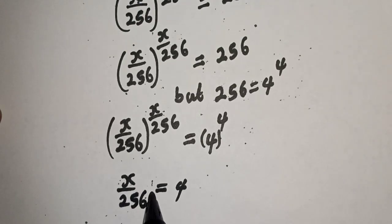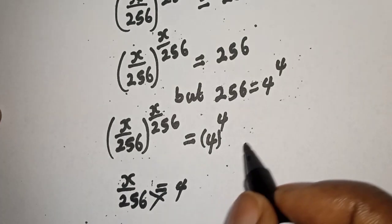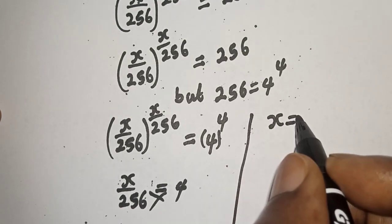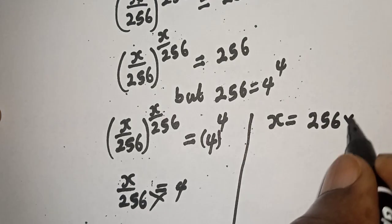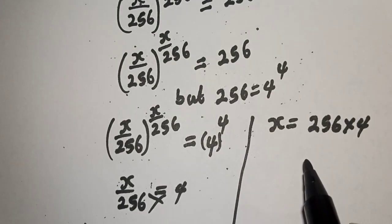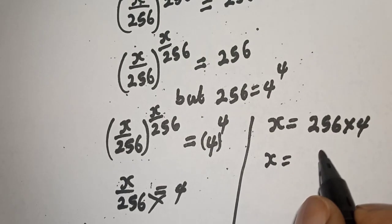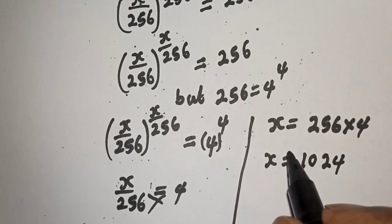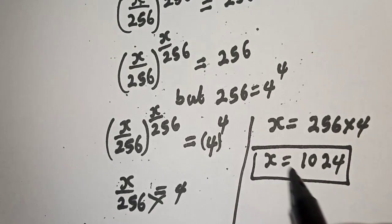Now let's cross multiply. If you cross multiply, we have s is equal to 256 multiplied by 4. So s is equal to 256 times 4, which is 1024. This is the final answer.